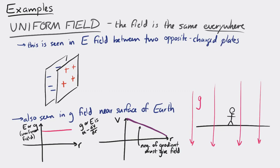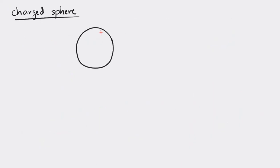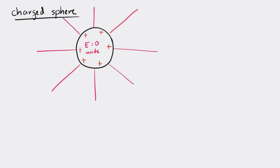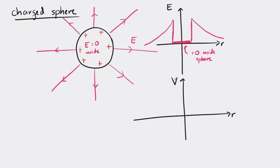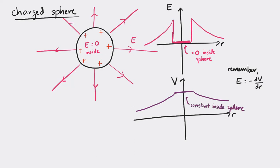Another special situation is a charged sphere. Consider a positively charged conducting sphere — there's no electric field inside, and outside the field looks like a point charge. The electric field versus r graph shows zero inside the sphere and a 1/r² decay outside. Given that, the potential versus r graph has a constant value inside the sphere and a 1/r decay outside. You can convince yourself that taking the negative gradient of this V vs. r graph at any location gives you the electric field at that location.